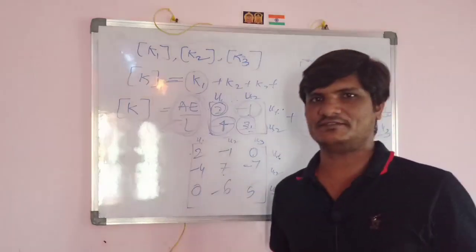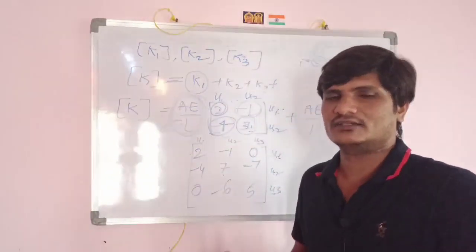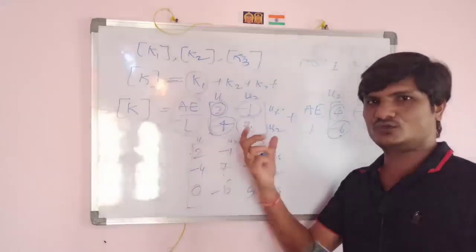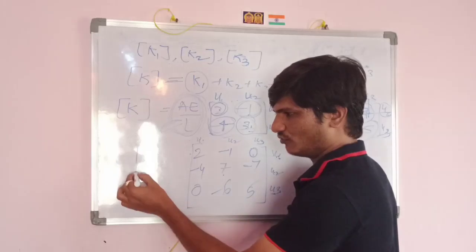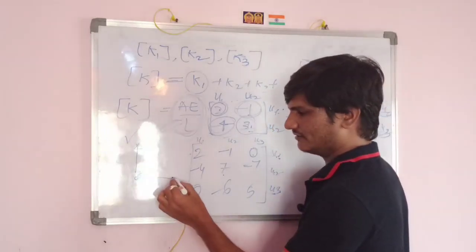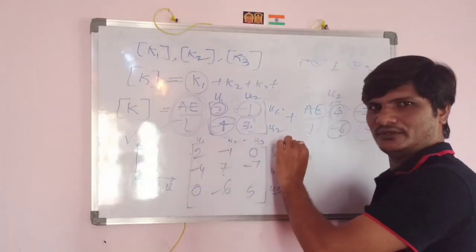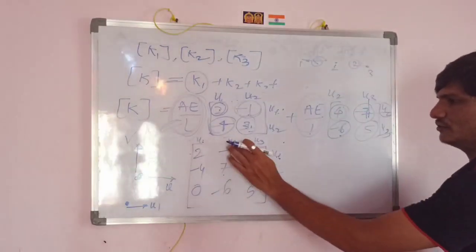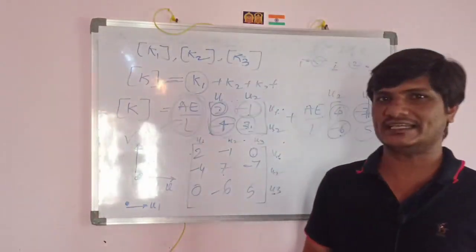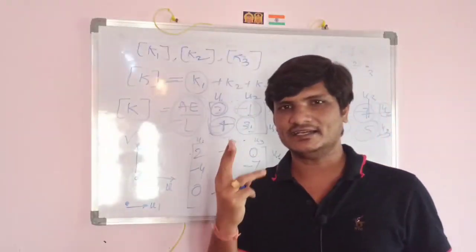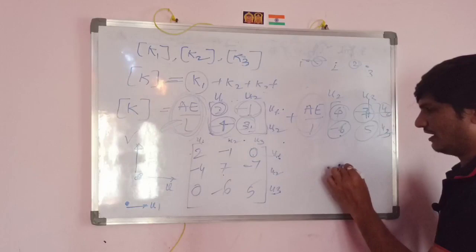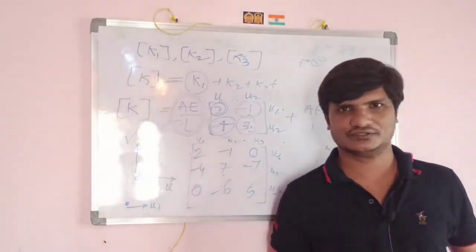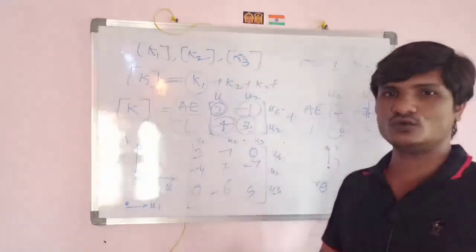This is the general method to calculate the global stiffness matrix for any element type. For a bar, each node has one deformation (u1, u2, u3). For a truss, each node has two deformations. For a beam, each node has two deformations: a vertical displacement v and a rotation theta — so v1, theta1, v2, theta2. In the next video, I will explain how to apply the boundary conditions.